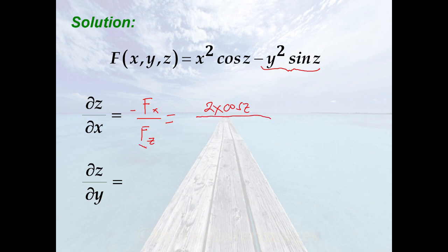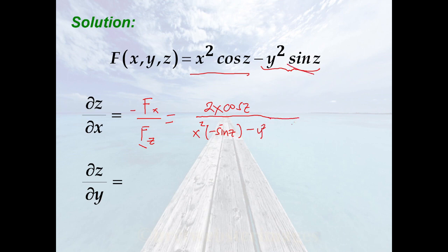Solving for the partial of f with respect to z, treating both x and y as constants: for the first term, we have x² times the derivative of cos(z), which is −sin(z); minus y² times the derivative of sin(z), which is cos(z). So the partial of z with respect to x equals the negative of 2x cos(z) all over (−x² sin(z) − y² cos(z)).